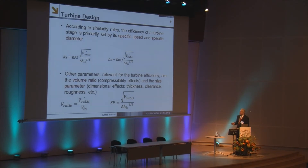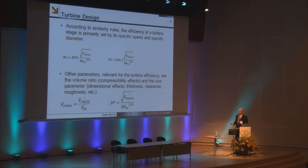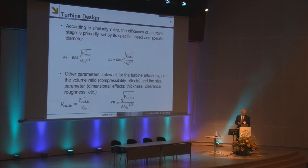These parameters are based on similarity rules — geometrical similarity rules. If you go to a very small turbine, it's difficult to maintain thickness, clearance, and roughness following the geometrical similarity rules of a large turbine, so there can be significant effects on the efficiency of the machine.